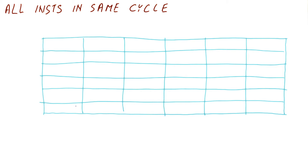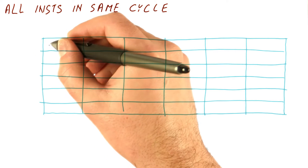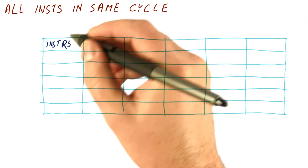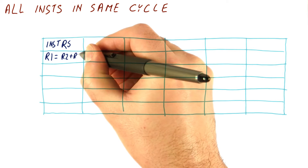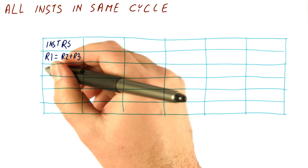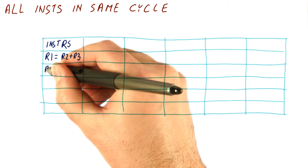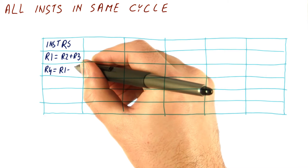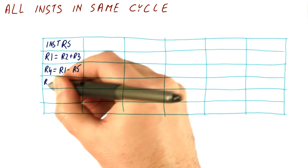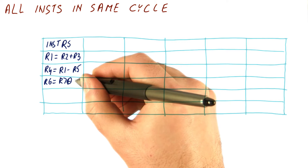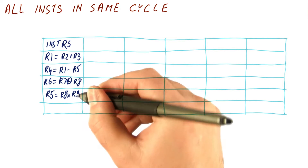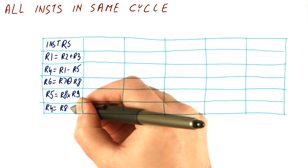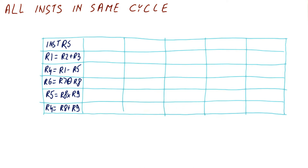We have a nice table here, and we're going to have five instructions. The first instruction is an add: R1 equals R2 plus R3. Then we have R4 equals R1 minus R5. Then we have XOR R6 equals R7 XOR R8. Then R5 equals R8 times R9. And finally, R4 equals R8 plus R9. Remember, these are instructions, not actual C operations — it's just a more compact representation of them.